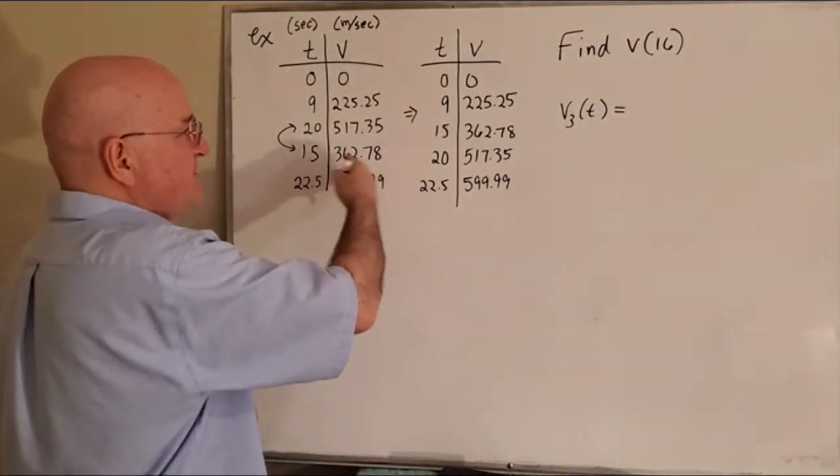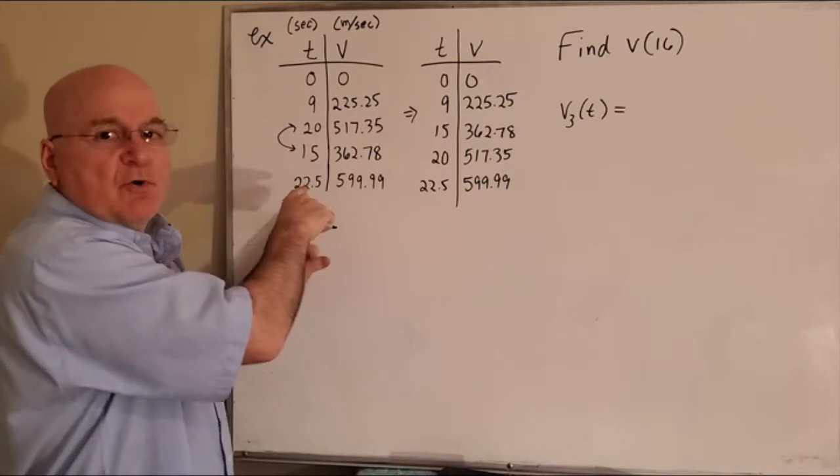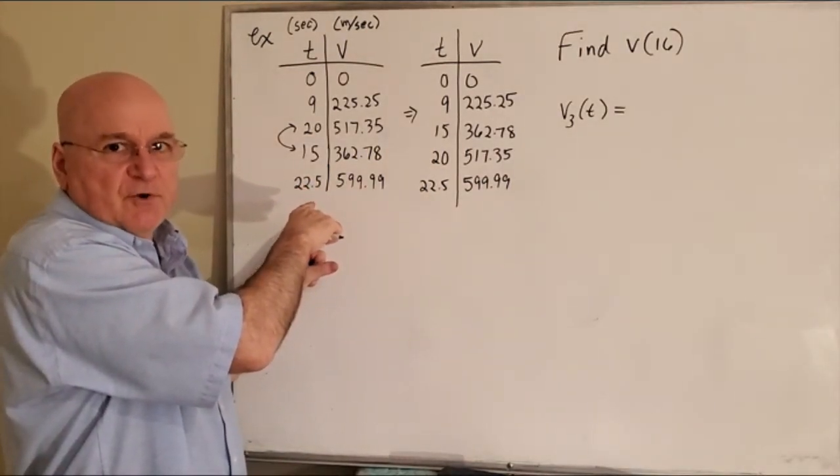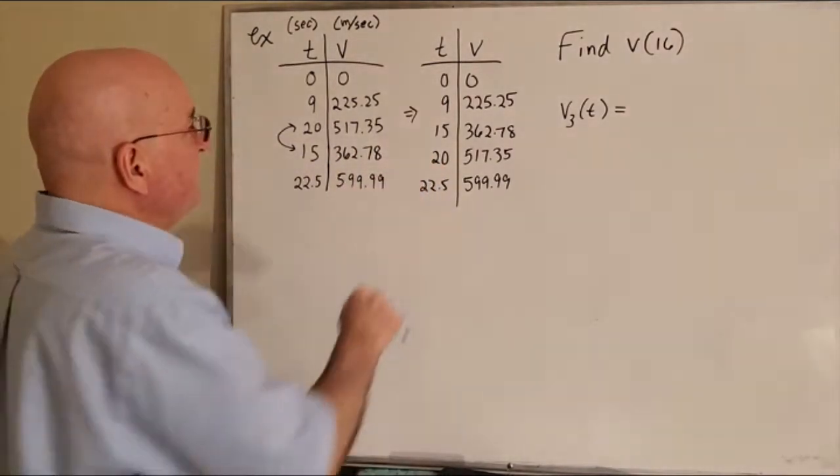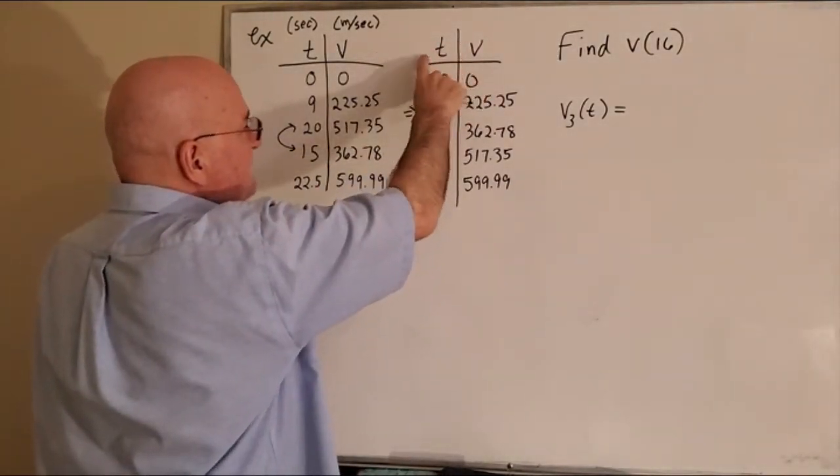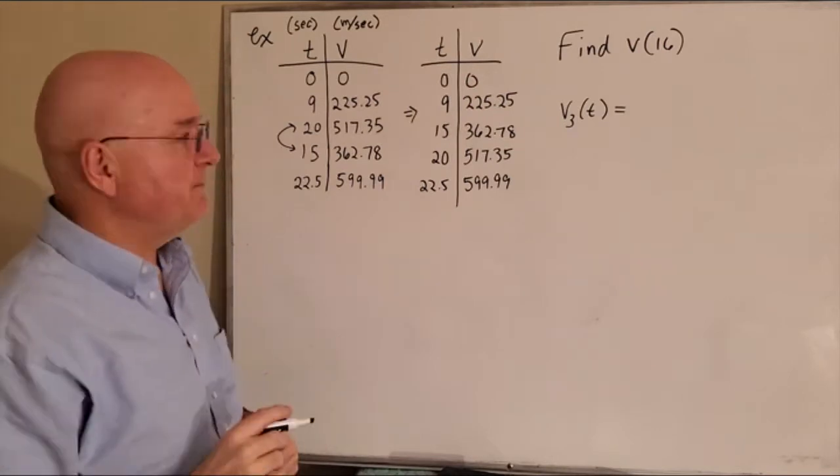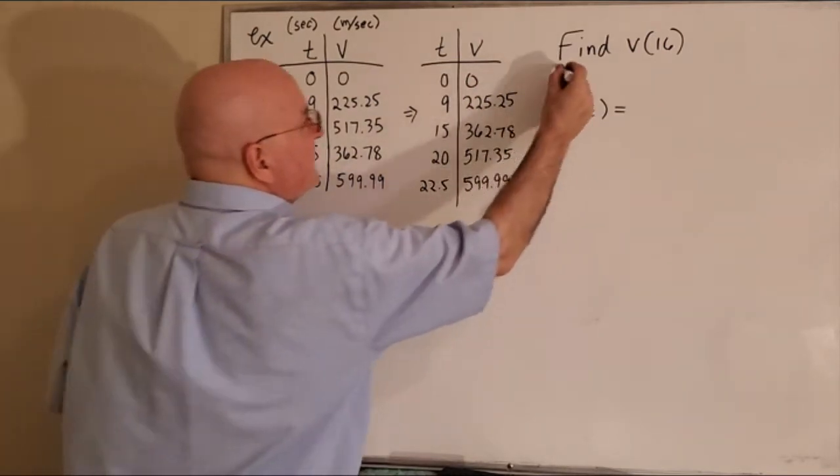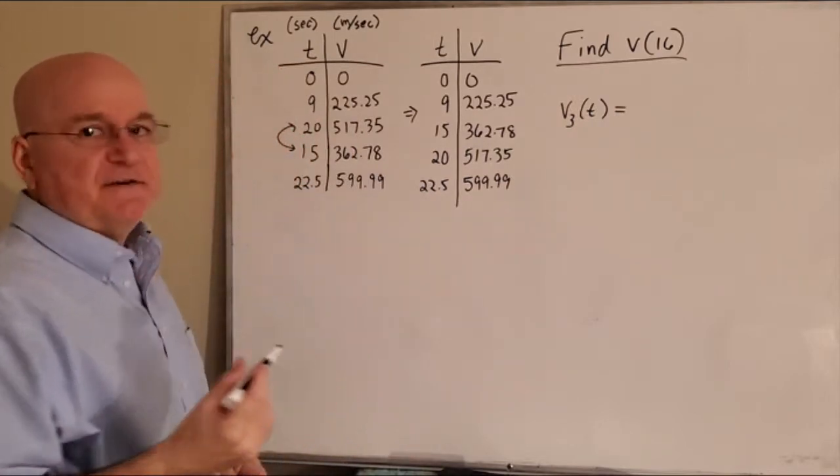If it's in this order, your algorithm will not work. Your pseudocode will not work. It needs to be in the correct time order. This could be X Y, T Y, T V, whatever it is. All right, so what we're going to find is V of 16.